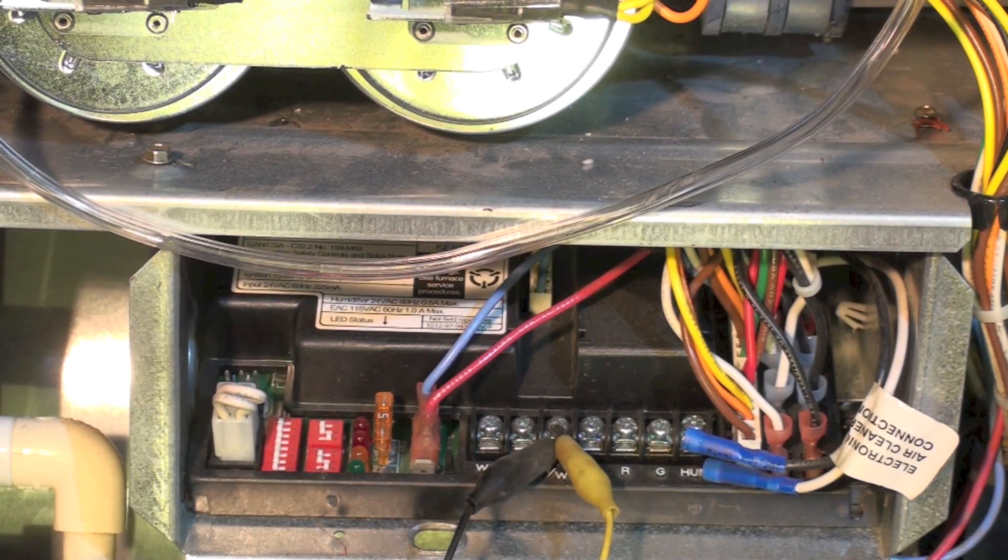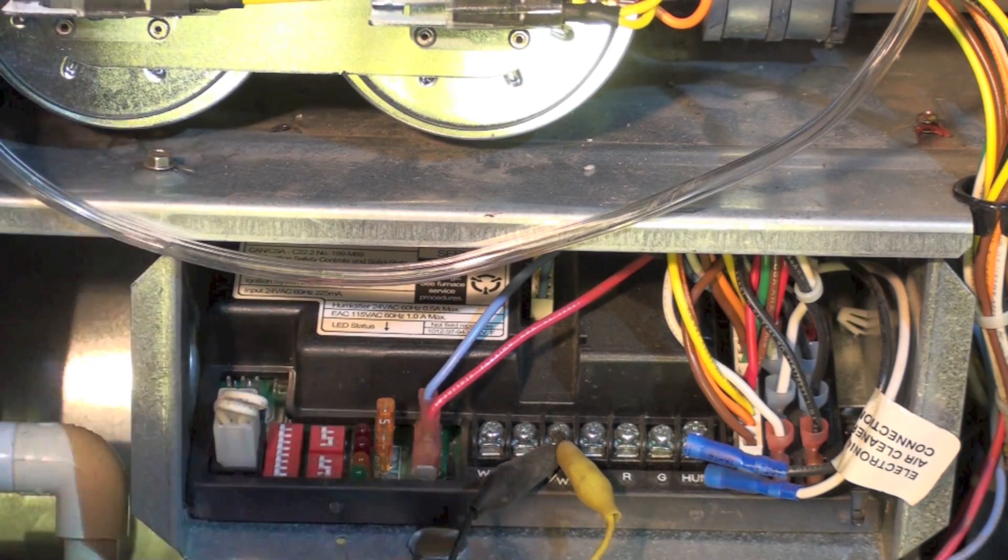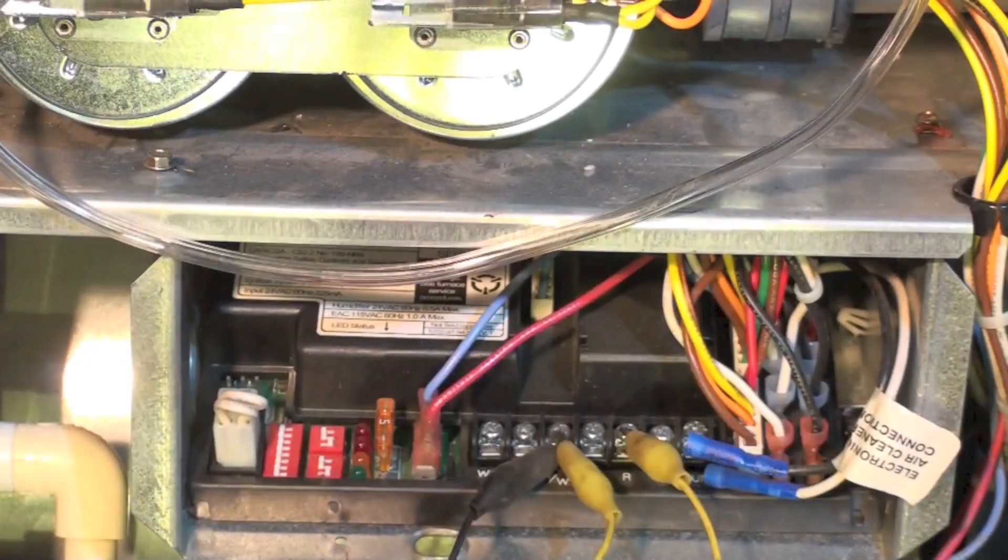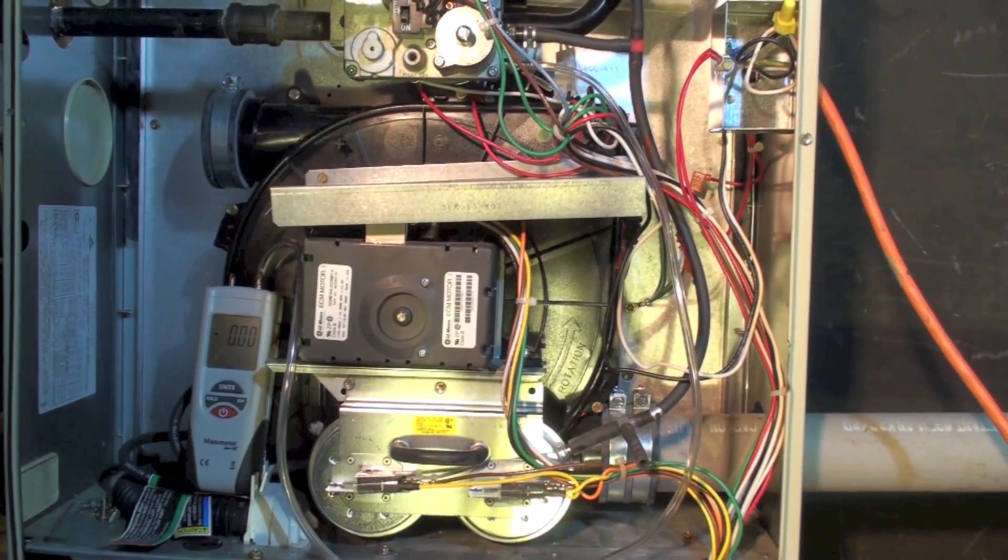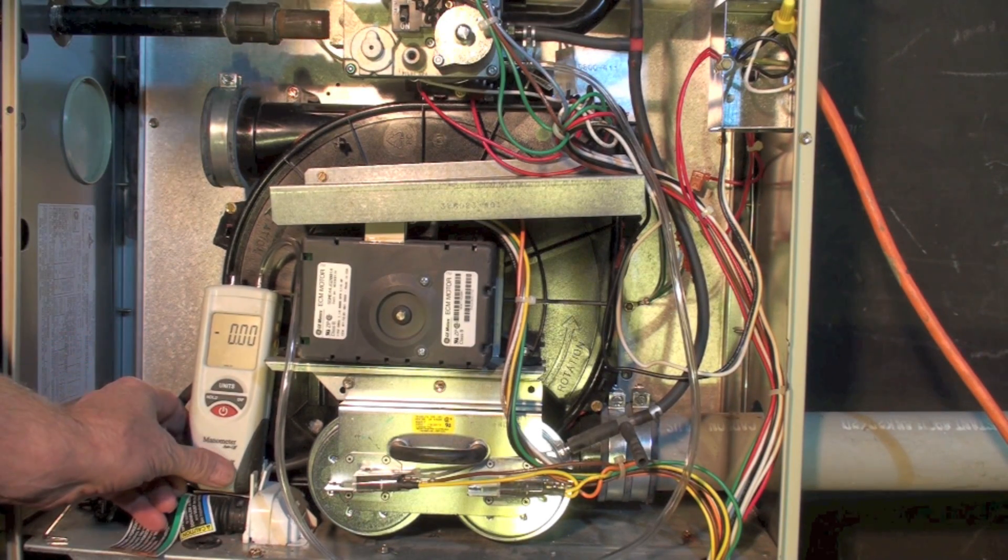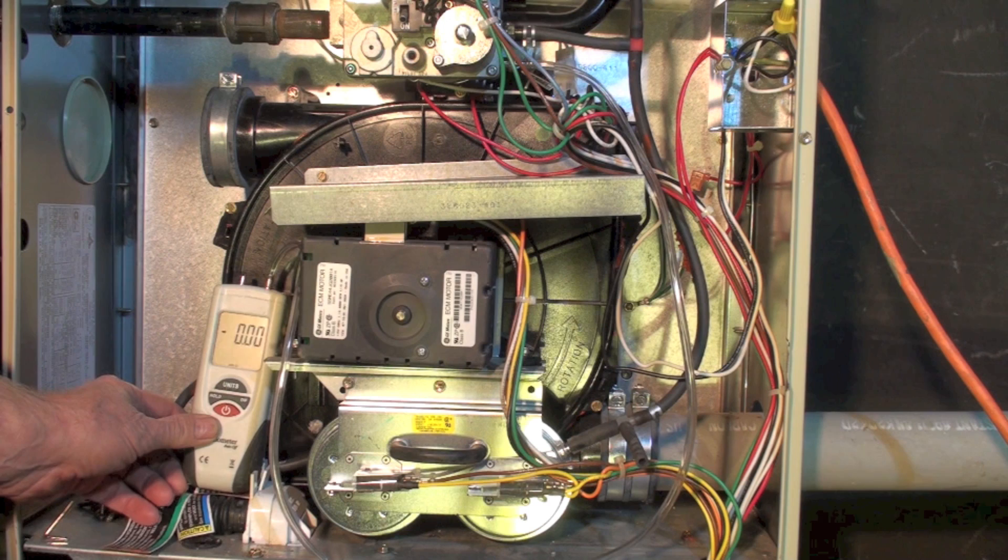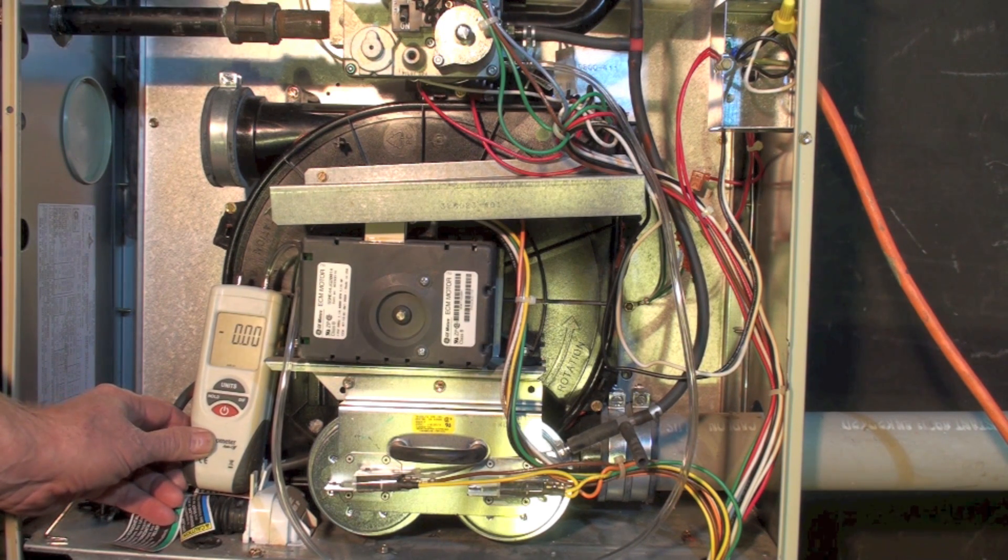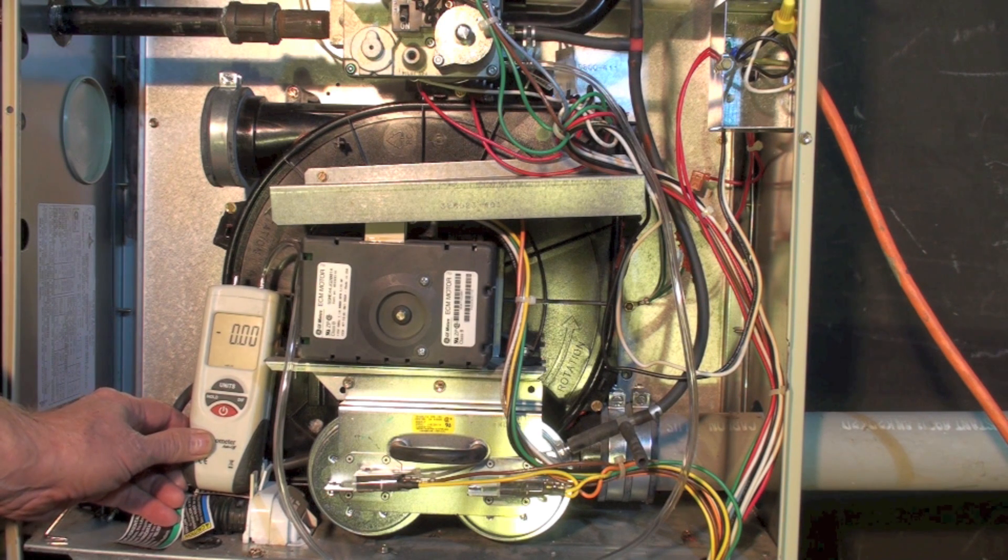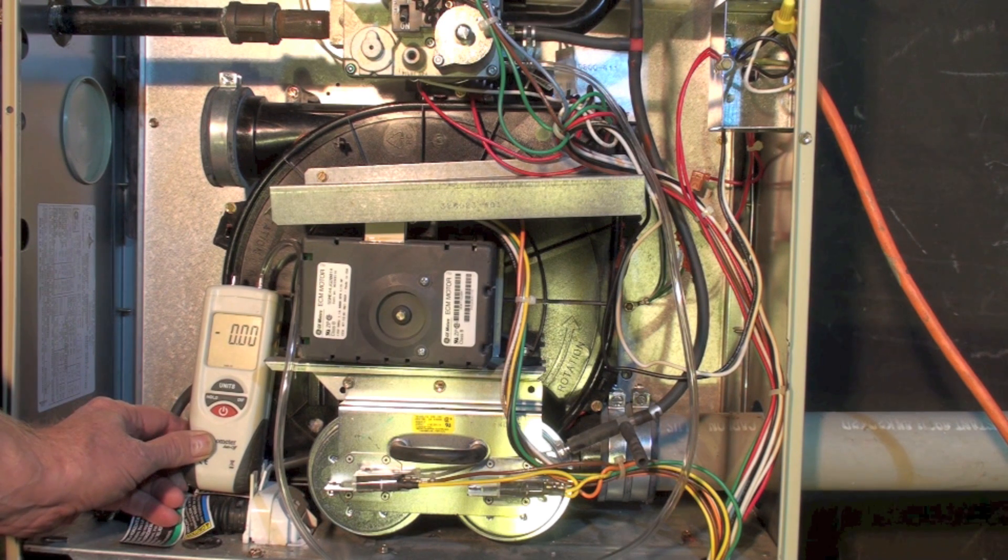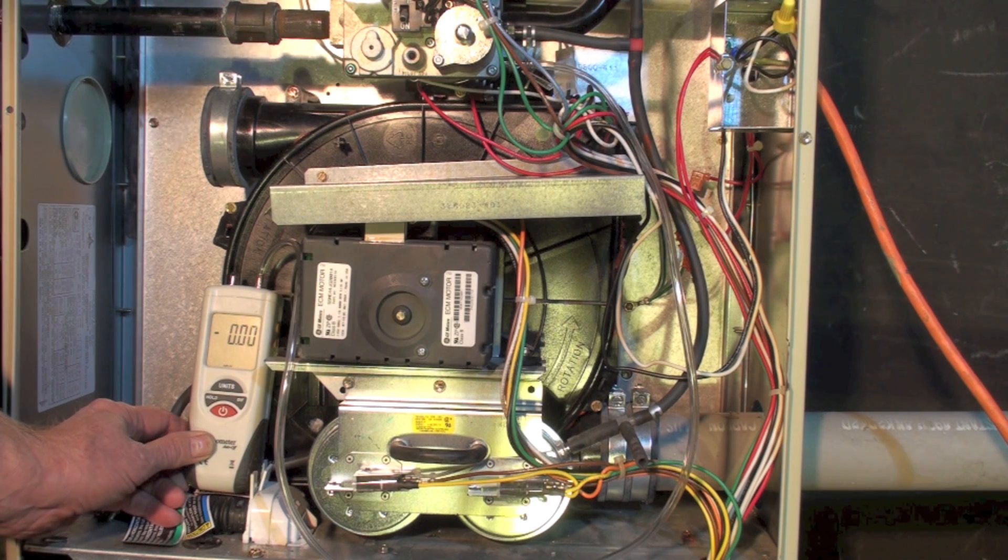On our control, I'm going to hook up the yellow jumper between R and W1. You can probably hear the inducer has come on. There's no pressure reading on the manometer yet because the gas valve hasn't opened. It's bringing up the pressure and it's going to start the hot surface igniter here in a minute. The hot surface igniter is now coming on.